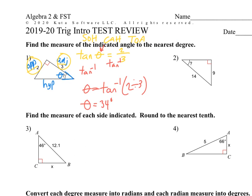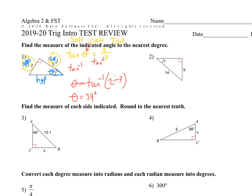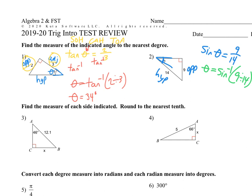Number 2 is going to be very similar setup — it's another problem where we're finding an angle measure. If this is our angle we're trying to find, that means the 9 is the opposite side because it's all the way through the other side of the triangle. The 14 is the hypotenuse because it is across from the right angle. So for opposite and hypotenuse, we must use sine. The trig equation will be sine of theta equals 9 over 14. You get your answer on your calculator by doing the inverse sine of 9 divided by 14. You always use inverse when you're finding angles.